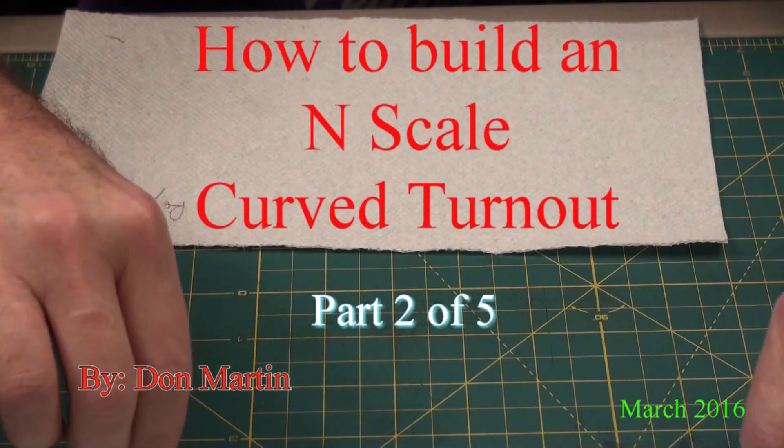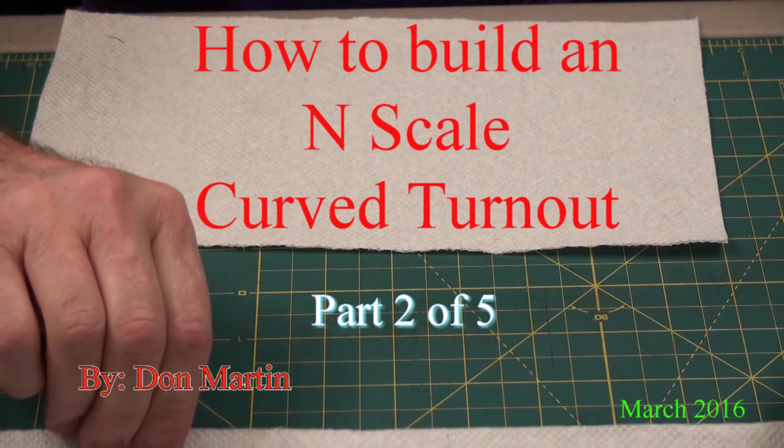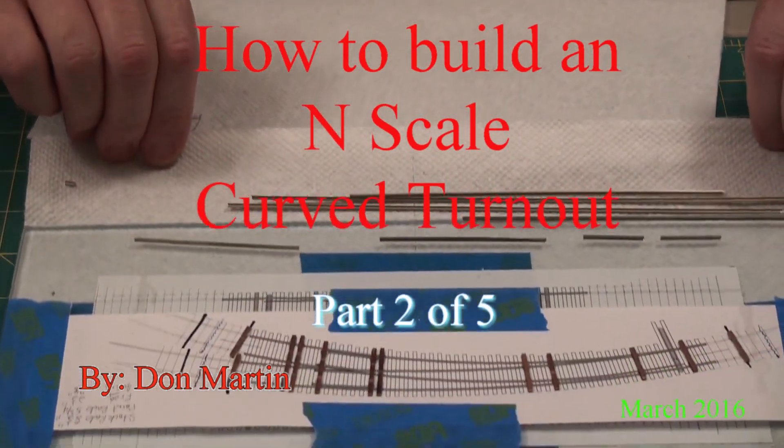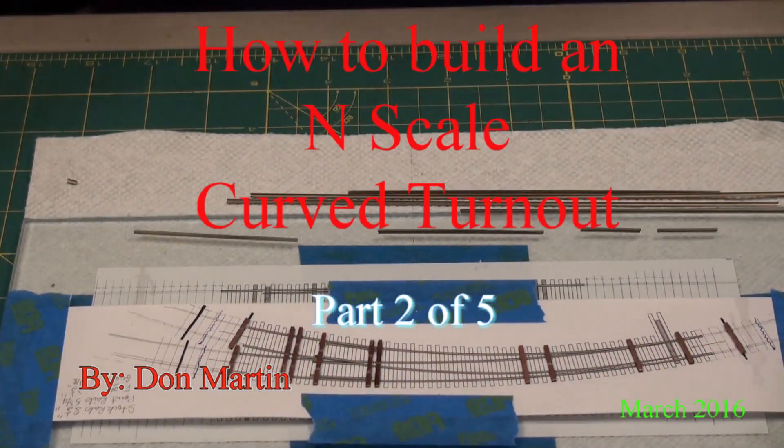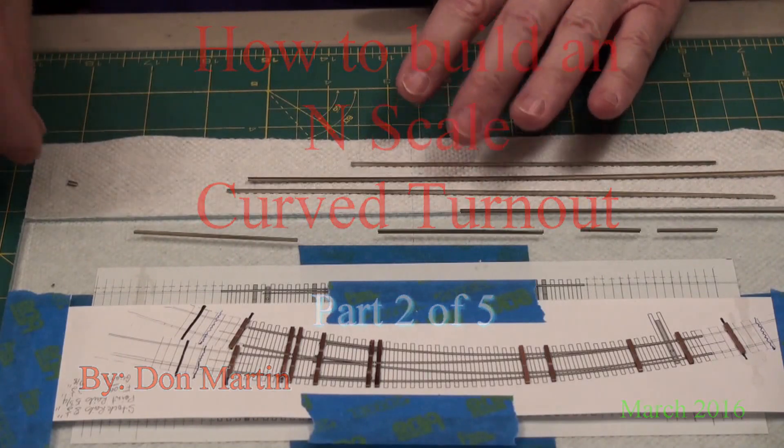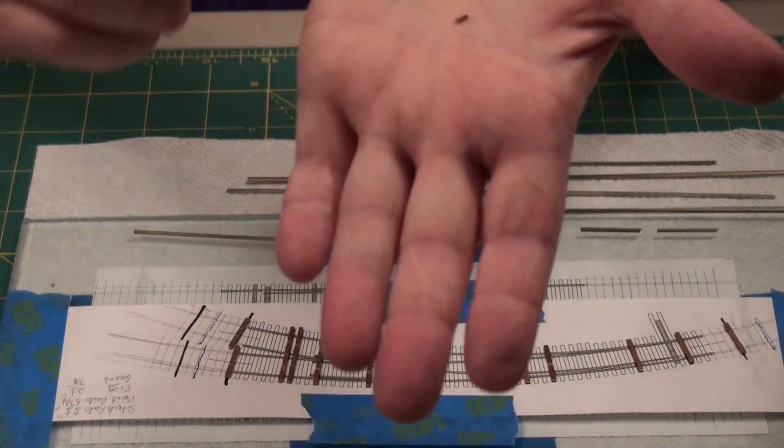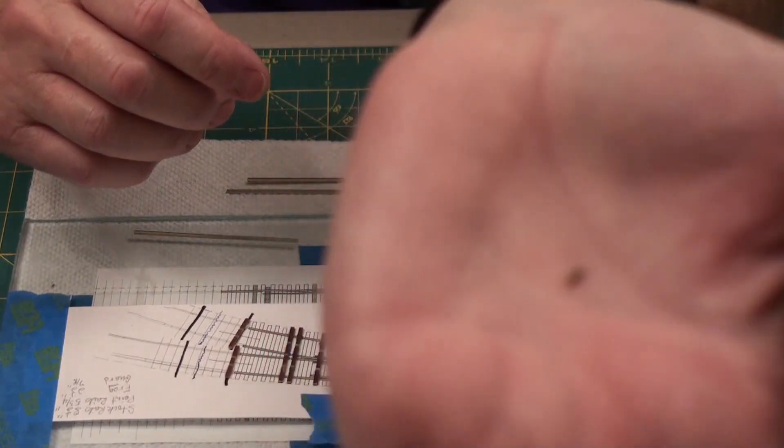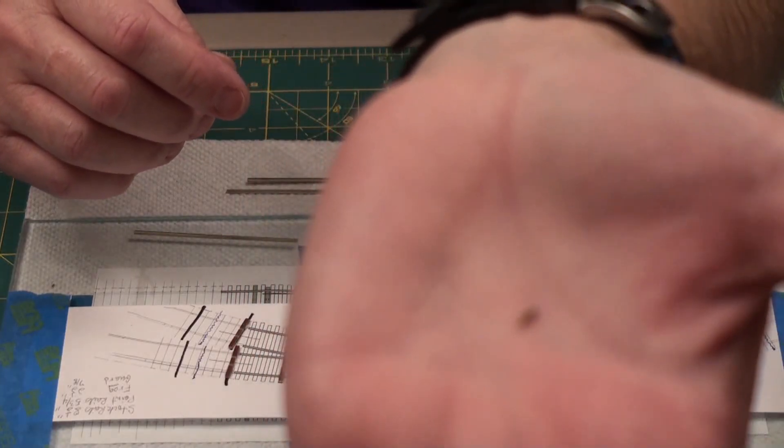All right, I have now cut off all the rail and dressed them so that they're all square on the end and there's no burrs. This is how much rail I've got left over from a 36 inch piece after doing everything.